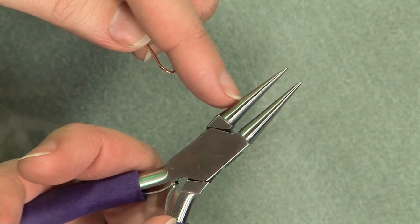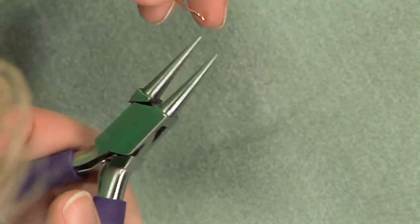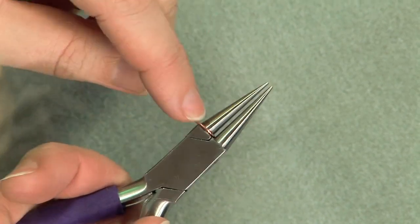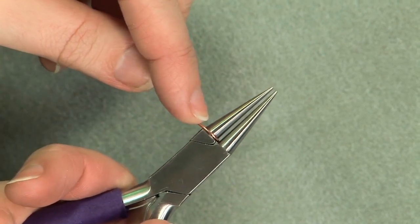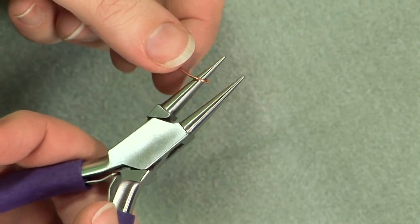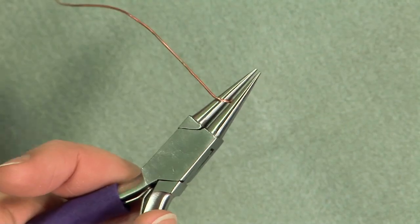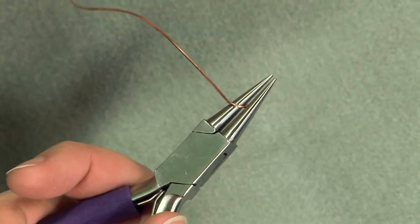If you want to consistently get the same size loop every time there are a number of tricks. One, you can draw on the jaws of your pliers with a permanent marker, you can also put some masking tape on there and draw on that, or you can always use a certain part, say always use the base so you know that you're always getting the same size loop every time. As you get more experience in your wire work you'll realize that you do naturally start to use the same part of pliers again and again so your loops will even out, so don't worry too much at first.